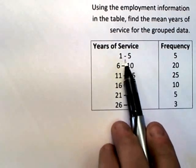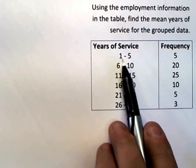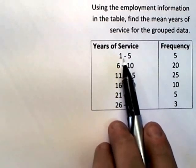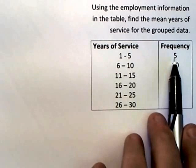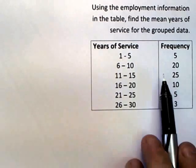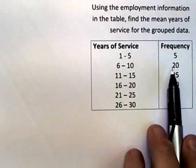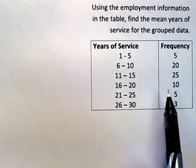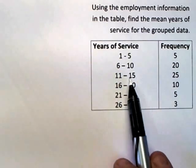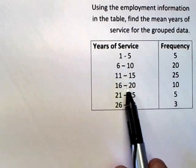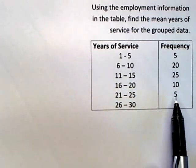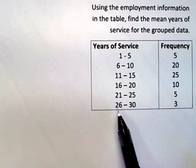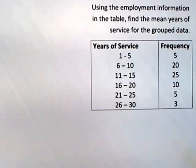For instance, there are five people who have between one and five years of service. We don't actually know whether it's four, or three and a half, or five, or 1.7. We just know there are five values between one and five. There are twenty people between six and ten years of service, twenty-five between eleven and fifteen, ten between sixteen and twenty, five between twenty-one and twenty-five, and three people between twenty-six and thirty.